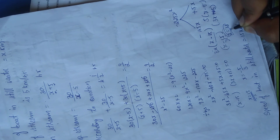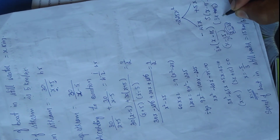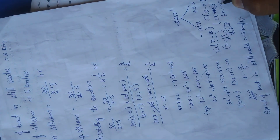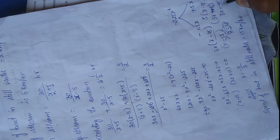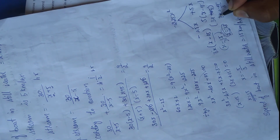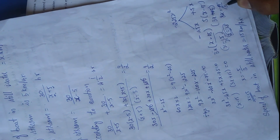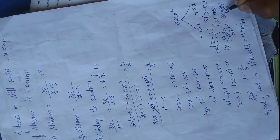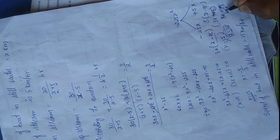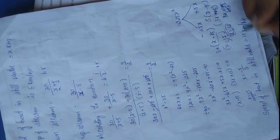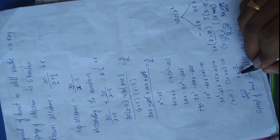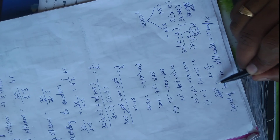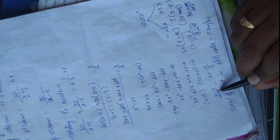Therefore x equals 15 or x equals minus 5 over 3. Since speed cannot be negative, we reject the negative value. Therefore x equals 15, meaning the speed of the boat in still water is 15 kilometers per hour.